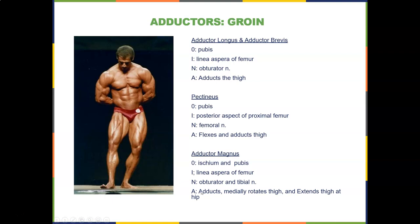The adductor magnus originates on the ischium and pubis, inserts on the linea aspera of the femur, and is supplied by the obturator and tibial nerves. It adducts, medially rotates, and extends the thigh at the hip. Walking on concrete, grass, or the beach is better than a treadmill because you recruit more adductor magnus and adductor longus to stabilize the hip and trunk — on a treadmill, the belt moves for you.